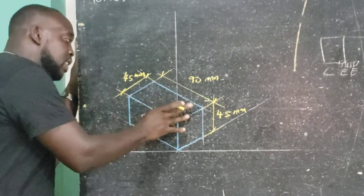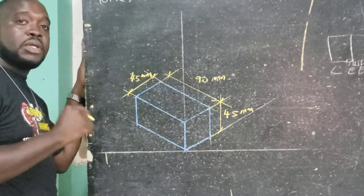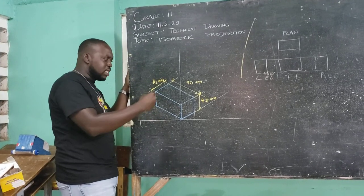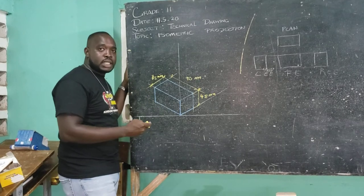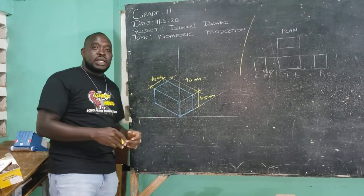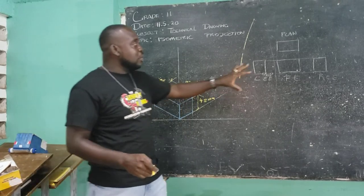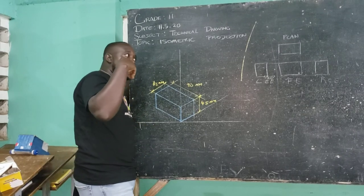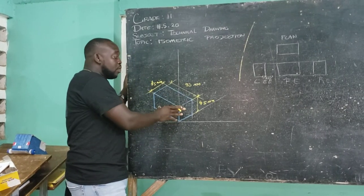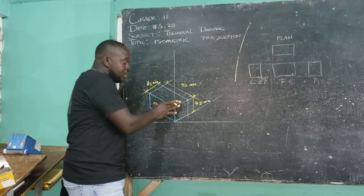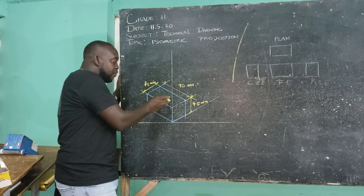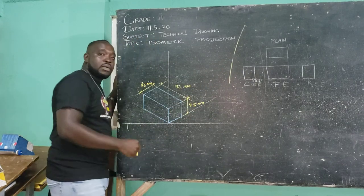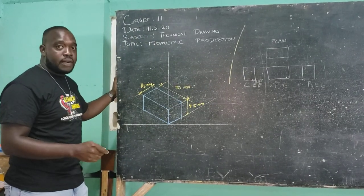Remember that this is the simplest form of isometry you will get. As we proceed during the course of this topic, we are going to do more complex objects, and at that point you will see how easy it is to put these views together to get the object itself. When we reach the topic of orthographic, we are going to be given isometric views of objects and asked to take the two-dimensional views from the isometric three-dimensional view — back to orthographic.